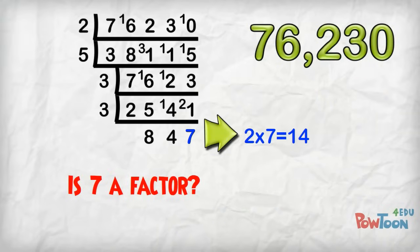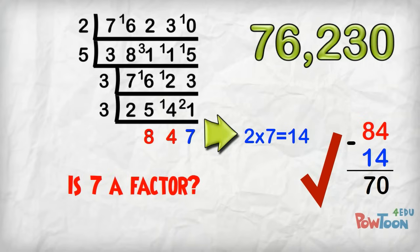So let's check. Double 7 is 14. 84 minus 14 is 70. Yes, 7 is a factor.